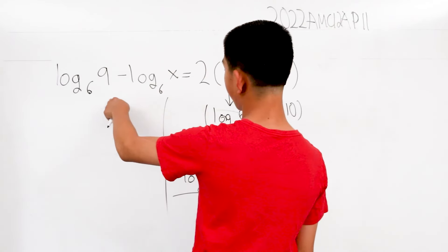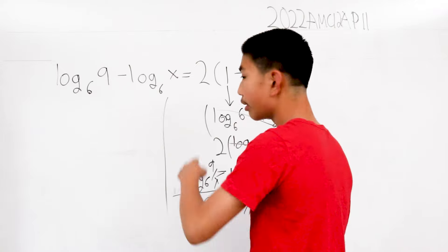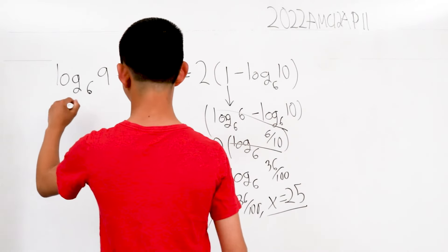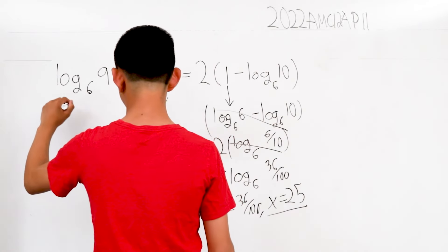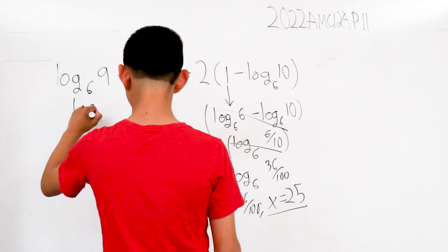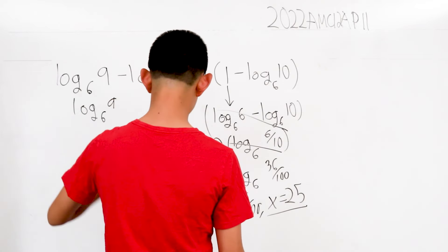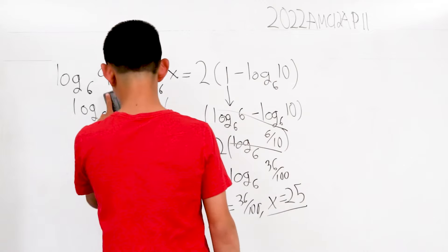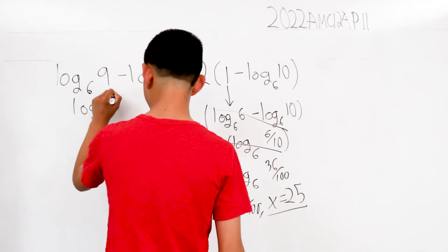This was log base 6 of 9 minus log base 6 of x, we reverse that. So this difference becomes log base 6 of x over 9.